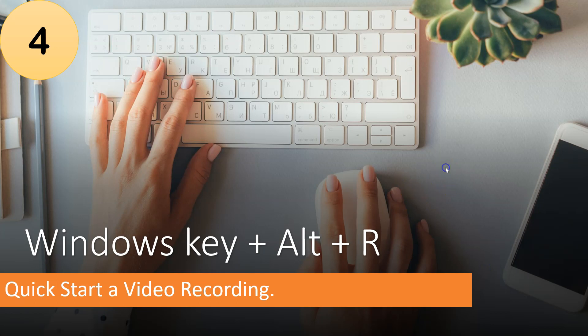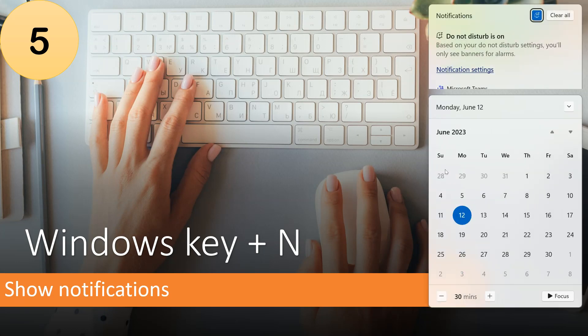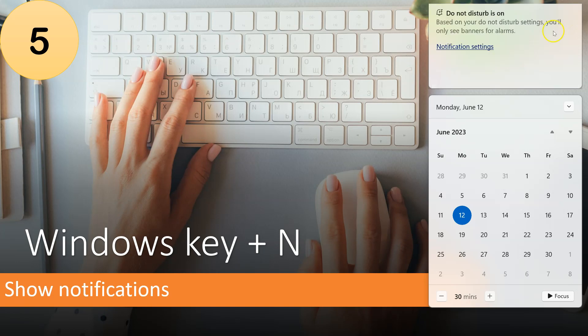Number 5 is Windows key plus End. If you want to see quick notifications, simply press Windows key plus End. It will open your notification panel and you can see all notifications and clear them from there.